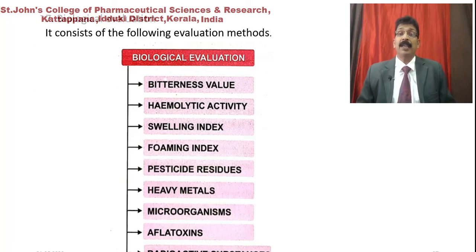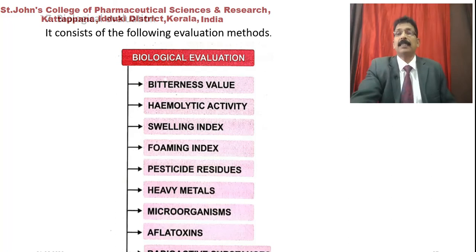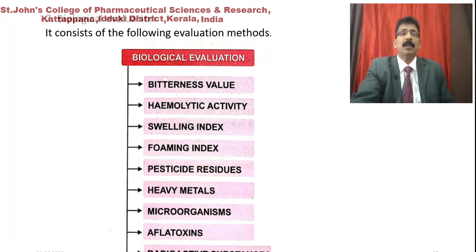Foaming index has various parameters beyond dirt removal and soap formation — it has many other impacts. That is why it is included here. Other categories include pesticide residue, heavy metals, microorganisms, aflatoxin identification, and radioactive substances, which may be present in herbal formulations or herbal drugs collected from various places. Apart from these, there are many separate pharmacological evaluations that can be performed for individual drugs.